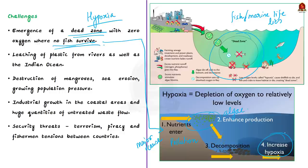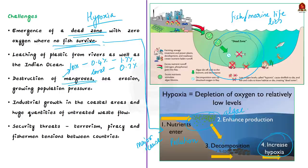Dead zones are a major problem in the Bay of Bengal. Along with this, leaching of plastic from rivers and from the Indian Ocean is another issue. Destruction of natural protection against floods — such as mangroves and coral reefs — is another concern. The annual loss of mangrove areas is estimated at 0.4% to 1.7%, and the loss of coral reefs is at 0.7%. A predicted sea level rise of 0.5 meters in the next 50 years will increase dangers along coastal regions. Many cyclonic storms originated from the Bay of Bengal in the last five years, largely due to destruction of mangroves and coral reefs. Sea erosion, growing population pressure, industrial growth, and huge quantities of untreated waste flowing into the ocean are also problems.